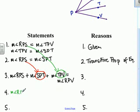I'm leaving the RPS alone, but in here for SPT I'm putting in another RPS because we showed that they were equal in step two. And here for TPV I'm putting in a third RPS because we showed in number one that they were equal.